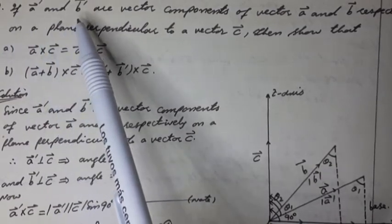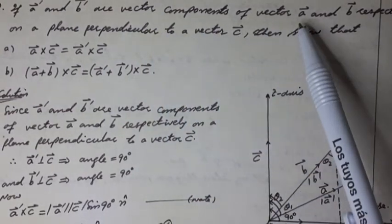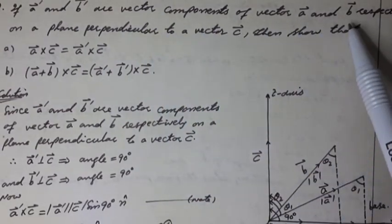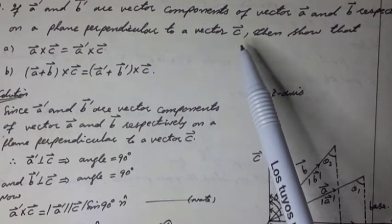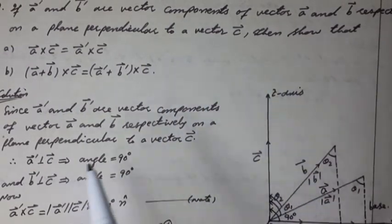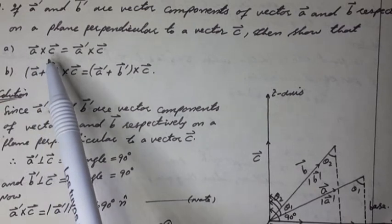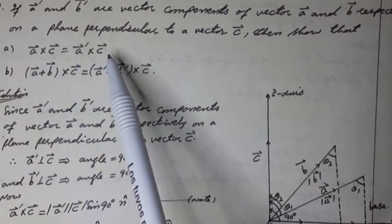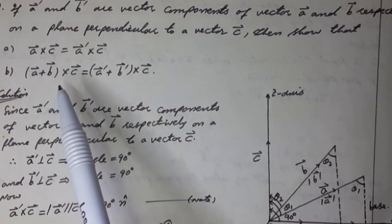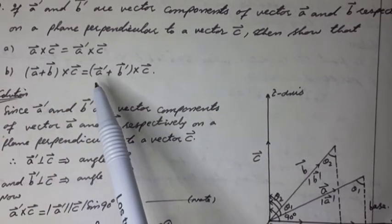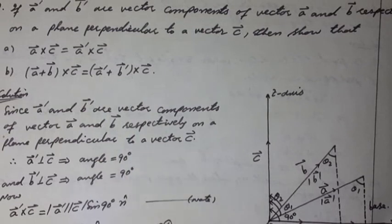If a-dash vector and b-dash vector are vector components of vector a and b respectively on a plane perpendicular to vector c, then show that: Part a, a vector cross c vector is equal to a-dash vector cross c vector. Part b, a vector plus b vector cross c vector equals a-dash vector plus b-dash vector cross c vector.